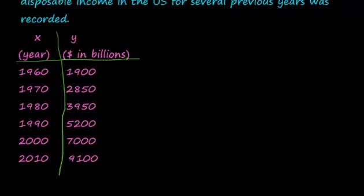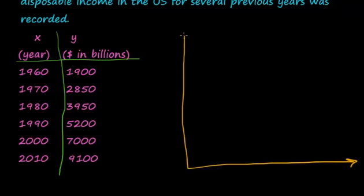So these are paired data because 1960 and this 1900 billion go together. We couldn't rearrange either one of these columns and have the same data set. So these are paired data. In 1960, this was the disposable income.